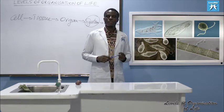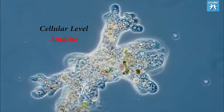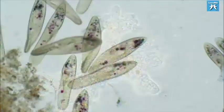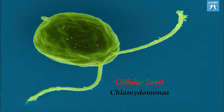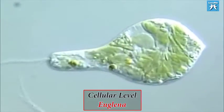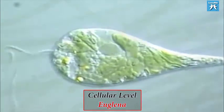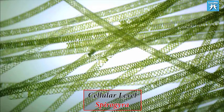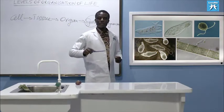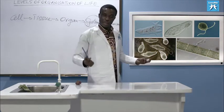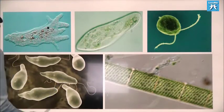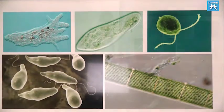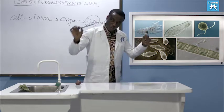Examples of organisms at the cellular level are amoeba, paramecium — they are aquatic, freshwater organisms — then we have chlamydomonas, which is an alga, then euglena, then spirogyra. When we looked at forms in which cells exist, we mentioned single and free-living, and this one was mentioned under filamentous.